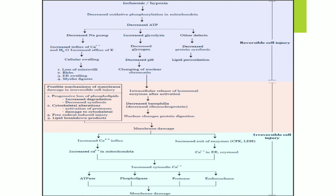The second pathway: increased glycolysis — since there is no oxygen, anaerobic glycolysis occurs, glycogen decreases, and lactic acid forms, so pH decreases and clumping of nuclear chromatin is seen. The third defect: decreased protein synthesis and lipid peroxidation. I hope you now understand reversible injury. Next, we will discuss irreversible injury. Thank you.